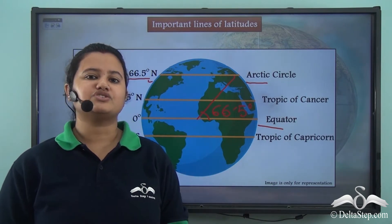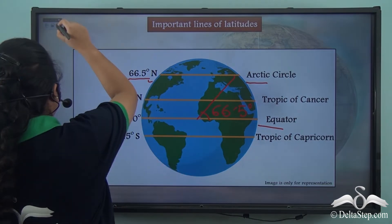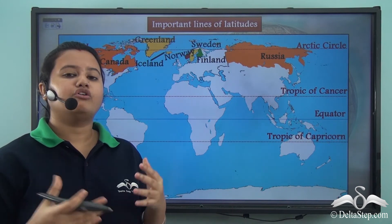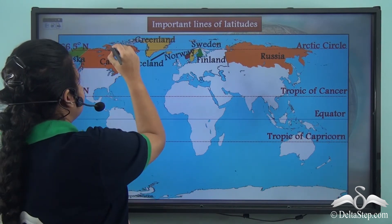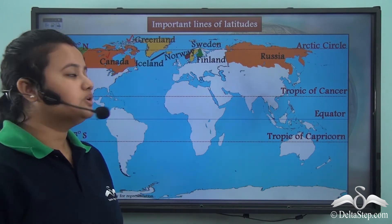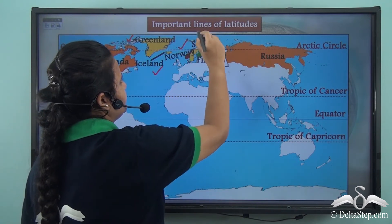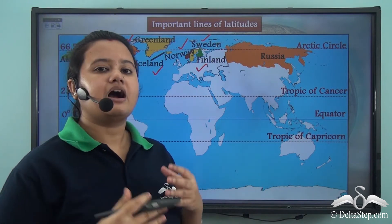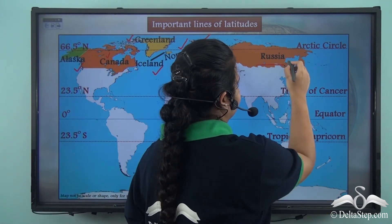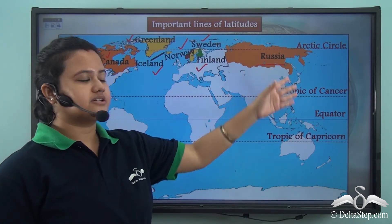The Arctic Circle passes through some countries of North America like Alaska, Canada, and Greenland, and also some countries of Europe like Iceland, Norway, Sweden, and Finland, and a country of Asia — Russia.